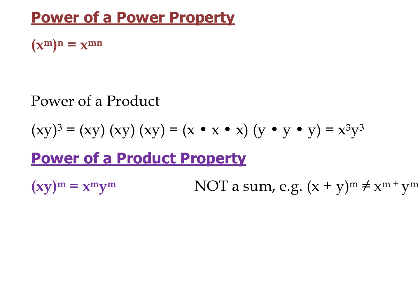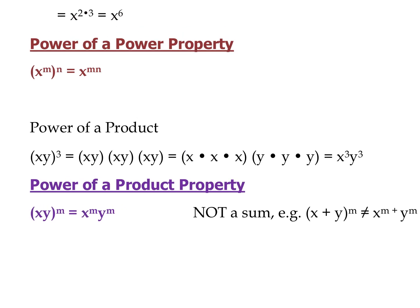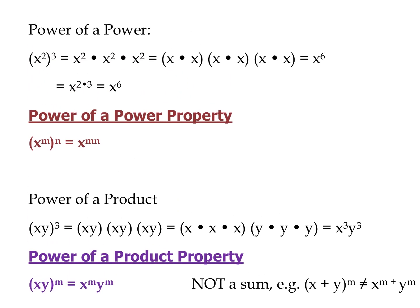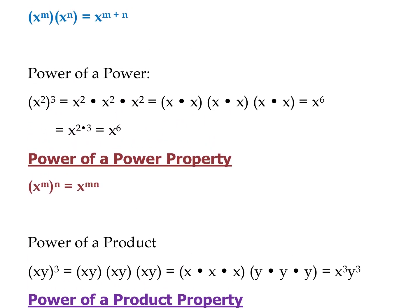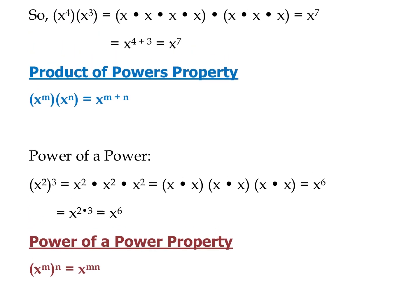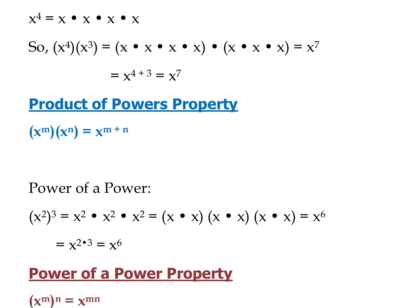Now let's see what these look like with some actual examples. Remember our three properties: the power of a product property, the power of a power — when we have a power raised to another power, multiply those exponents together — and multiplying like bases, where we add their exponents to get the new power.